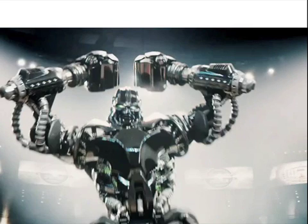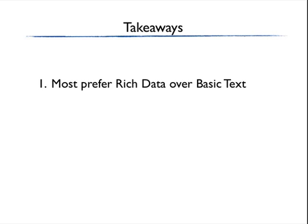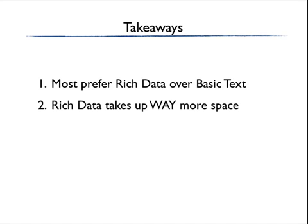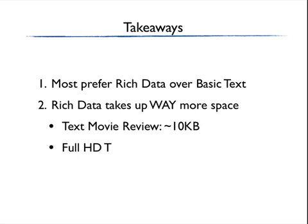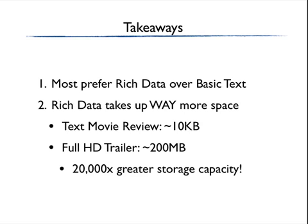So there you go. We can safely label a few things as obvious. Most of us would prefer rich data over basic text in most cases, and rich data takes up way more space than basic text. The text of the movie review when downloaded was 10,000 bytes of disk space. The movie trailer in HD was 200 megabytes. That's an incredible difference — we're talking 20,000 times more storage capacity required to store the movie trailer than to read the review.